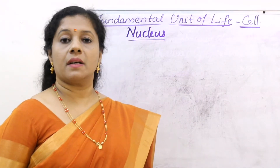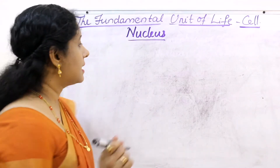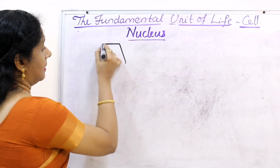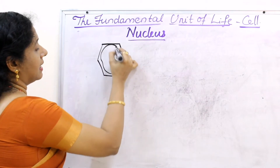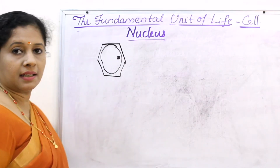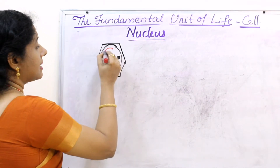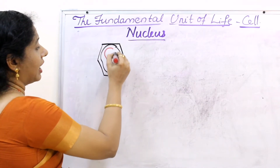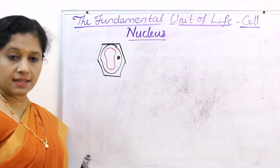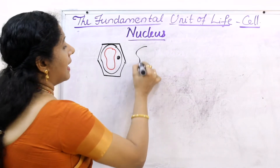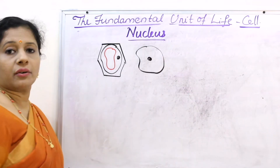Most cells possess a nucleus, which is the controlling center of the cell. In a plant cell, the nucleus is located to the side of the cell because in plant cells there is a large vacuole in the center, and because of its presence the nucleus is pushed to the side. Whereas in an animal cell, the nucleus is in the center of the cell.